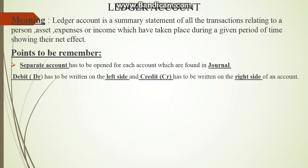The second point: debit has to be written on the left side and credit has to be written on the right side of an account. We need to apply all the golden rules of accounting — the personal account rule, real account rule, and nominal account rule. According to those rules, we record which side is debit and which is credit, and this helps us in the next process.